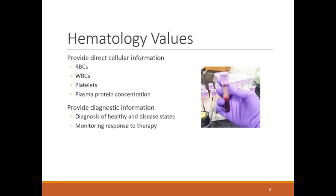Hematology values provide information on red blood cells (RBCs), white blood cells (WBCs), platelets, and plasma protein concentration. This helps provide diagnostic information and diagnose healthy and disease states. It also helps us monitor response to therapy — if we have an animal in a disease state and we're making it better and they have better numbers, that's a good thing.